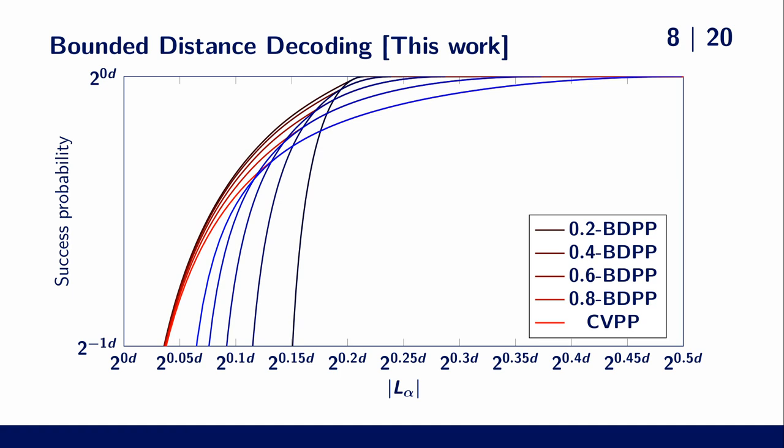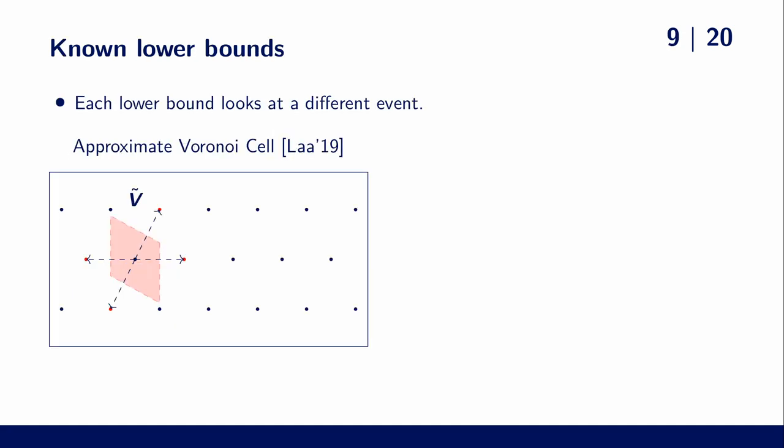So why do these lower bounds fail to be tight everywhere? The main problem seems to be that they only look at a single event.